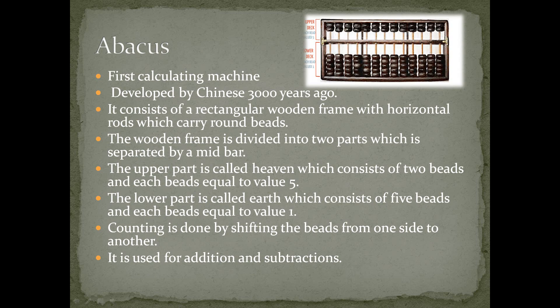Abacus is the first calculating machine. It was developed by the Chinese around 3000 years ago. It consists of a rectangular wooden frame with horizontal rods which carry round beads. The wooden frame is divided into two parts, which is separated by a mid bar.